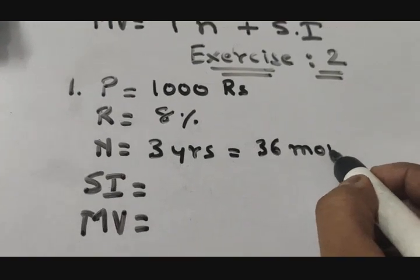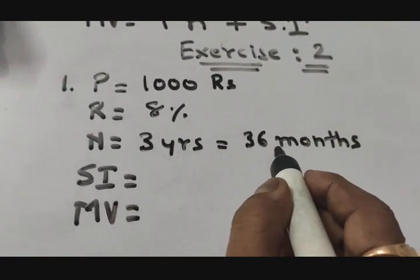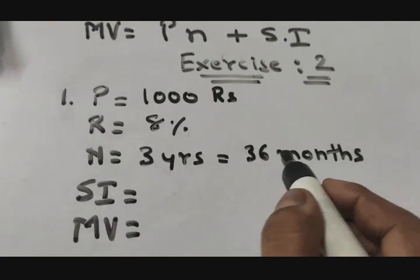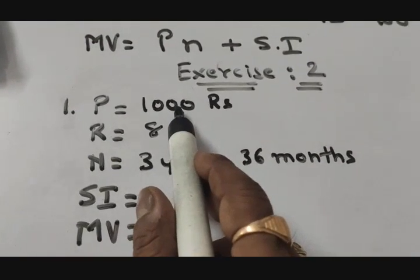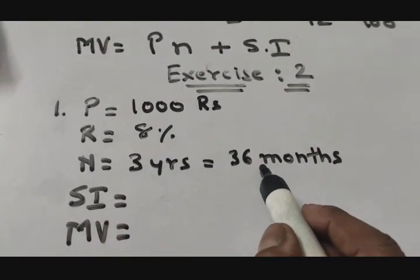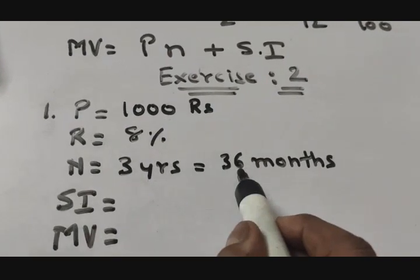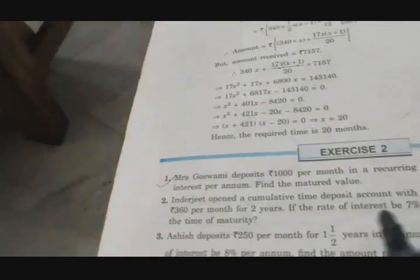So it is equivalent to 36 months. Always remember that you have to convert the years into months because recurring deposits are always deposited monthly. So for 3 years, she is depositing 1000 rupees for 36 months. How many rupees is she going to deposit? So 1000 rupees multiply by 36 months, that is 36,000. That we'll see afterwards.